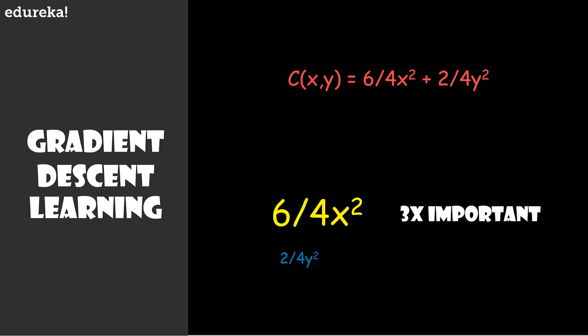The gradient of the cost function is one more layer of complexity that still tells us what nudges to all these weights and biases cause the fastest change to the value of the cost function. So when you initialize the network with random weights and biases and adjust them many times based on this gradient descent process, how well does it actually perform on images that it's never seen before?